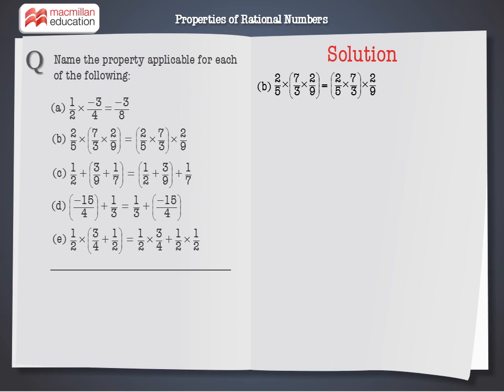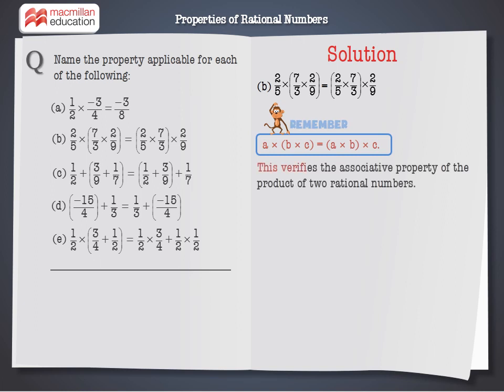In B, observe that the three rational numbers on the left-hand side of the equation exactly correspond with those on the right-hand side. But the position of the parenthesis or brackets is different. That is, it is of the form A into B into C is equal to A into B into C. This verifies the associative property of the product of two rational numbers.